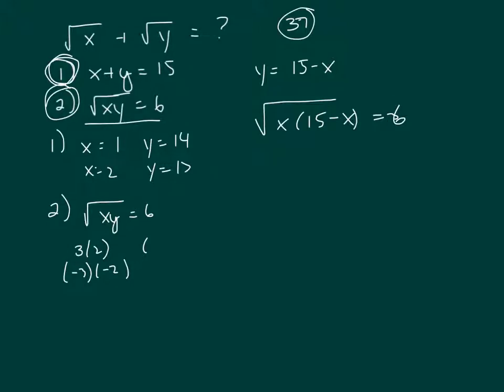So that would be the square root of 15x minus x squared equals 6. And then square both sides of the equation to get rid of the radical. So that would be 15x minus x squared equals 36. This is a quadratic equation.